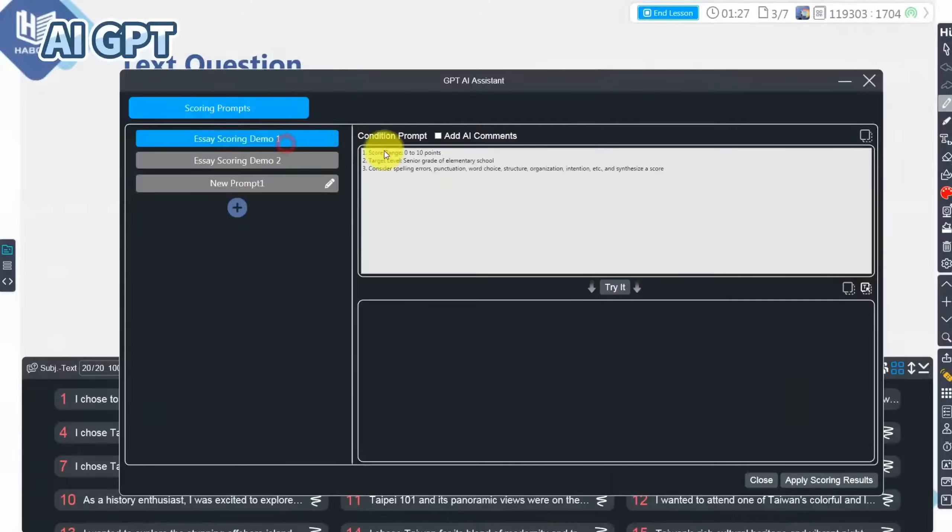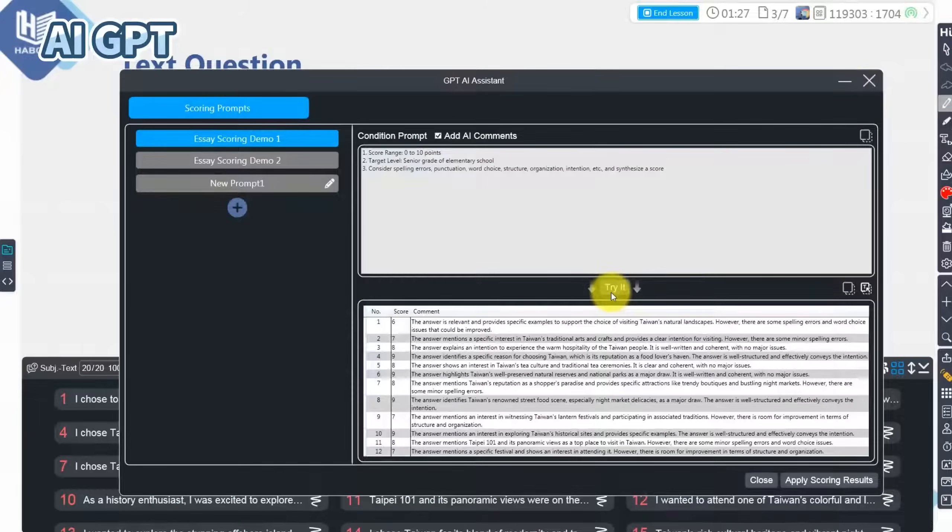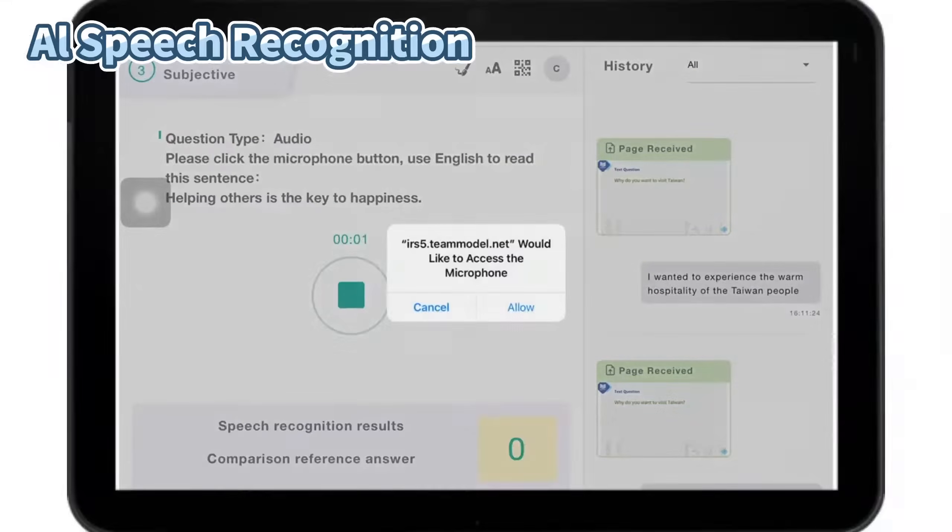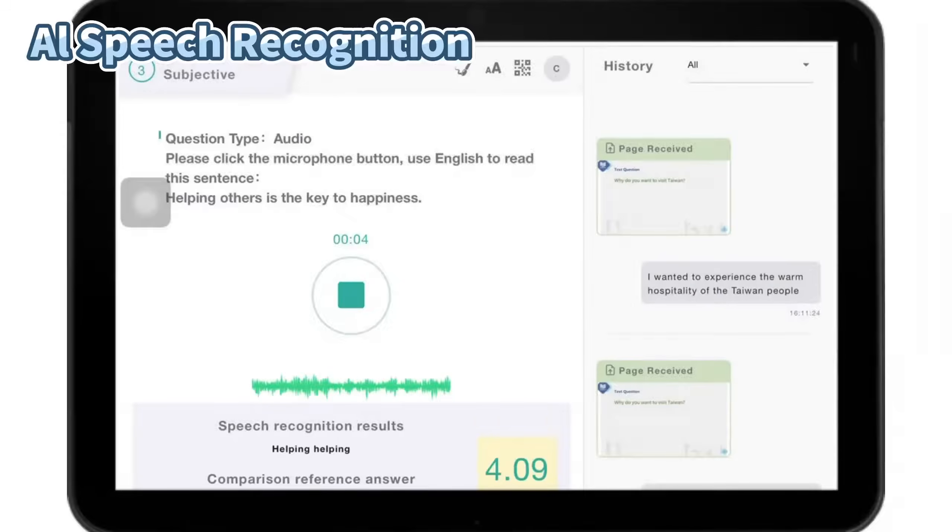Articles and texts can be summarized, reviewed, and graded by AI. The correctness of speaking exercises can be automatically reviewed by AI.